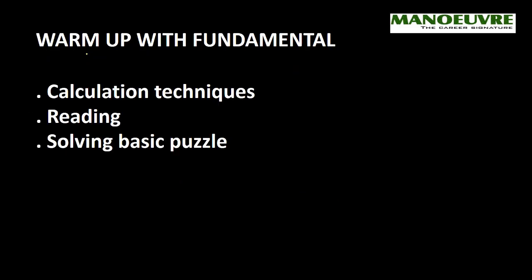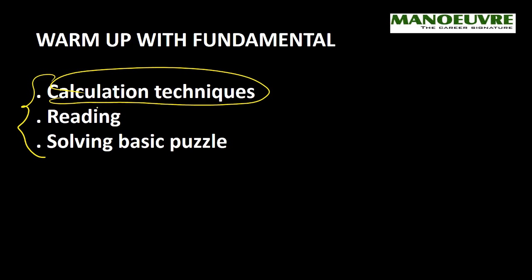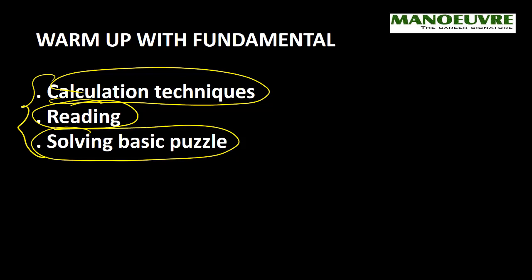If you are starting your CAT preparation from scratch, you should work on three areas first: calculation techniques, the reading part, and solving basic puzzles. Calculation techniques will help you in the Quantitative Aptitude section, reading will help you in the Verbal section, and solving basic puzzles will help you in the LR and DI sections.